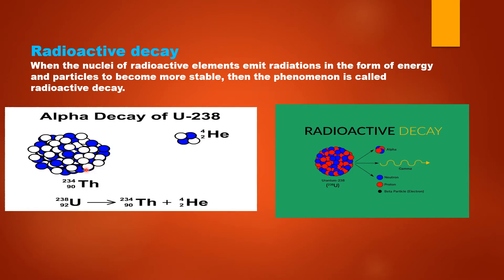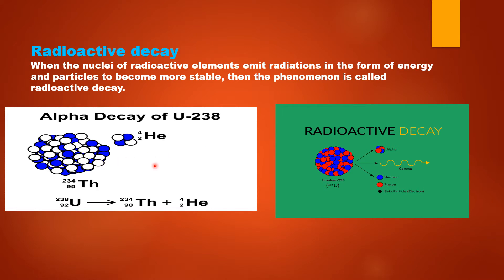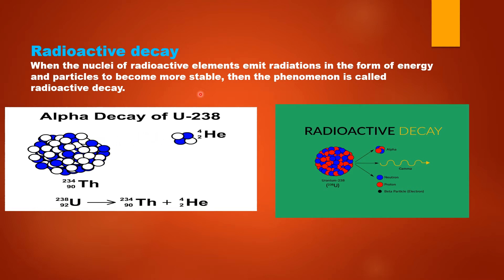Here you can see this is the nucleus of uranium. When this uranium nucleus undergoes radioactive decay, it is releasing some particles along with energy. The definition of radioactive decay is: when the nuclei of radioactive elements emit radiations in the form of energy and particles to become more stable, then the phenomenon is called as radioactive decay.